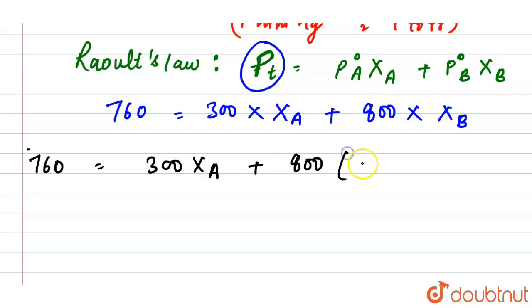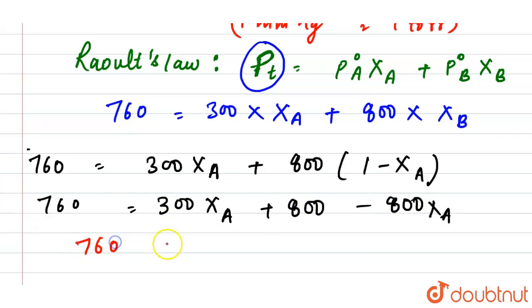So 760 = 300X_A + 800 - 800X_A. This gives us 760 = 800 - 500X_A.